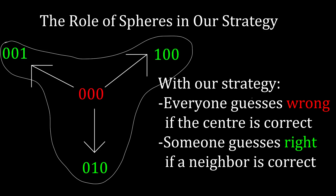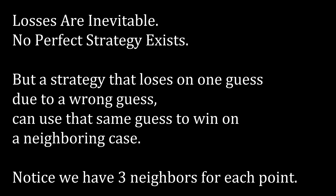With our strategy, there are two things that can happen on a sphere. If the correct sequence is the codeword, the three players guess wrong and you lose. If the correct sequence is any of the three other points, one player will guess right, the other two pass, and you win. In a sense, we have connected the loss on the codeword with three wins on its three neighbors. Remember, no strategy can possibly be perfect — every strategy will always have a loss on some point. These spheres are just a way to associate each loss with the greatest amount of wins possible, which is the number of neighbors of any point, which is three.